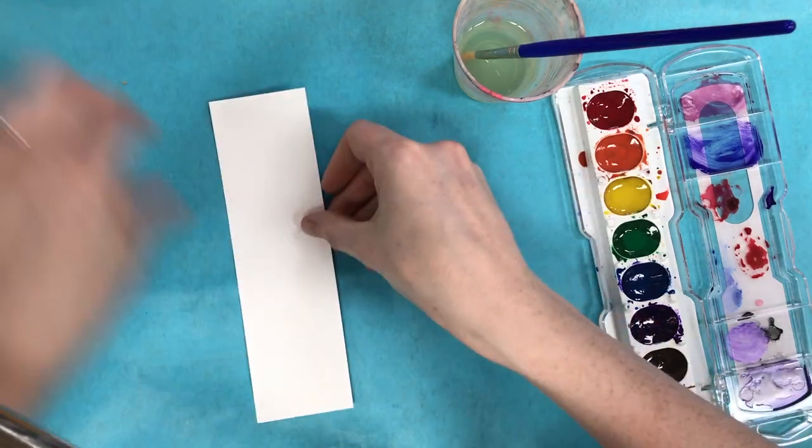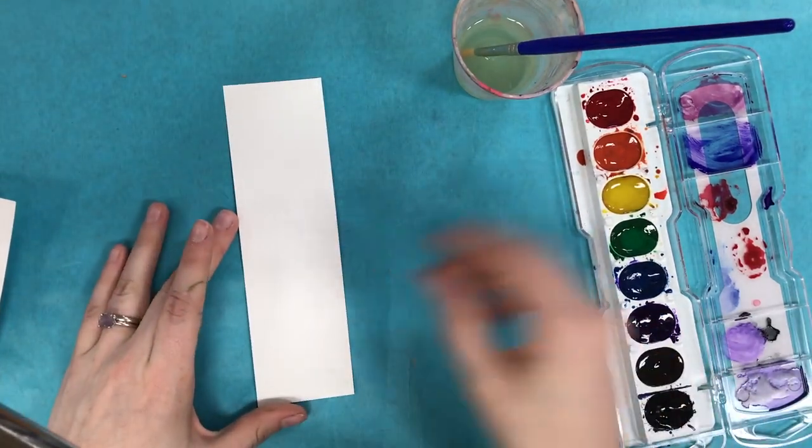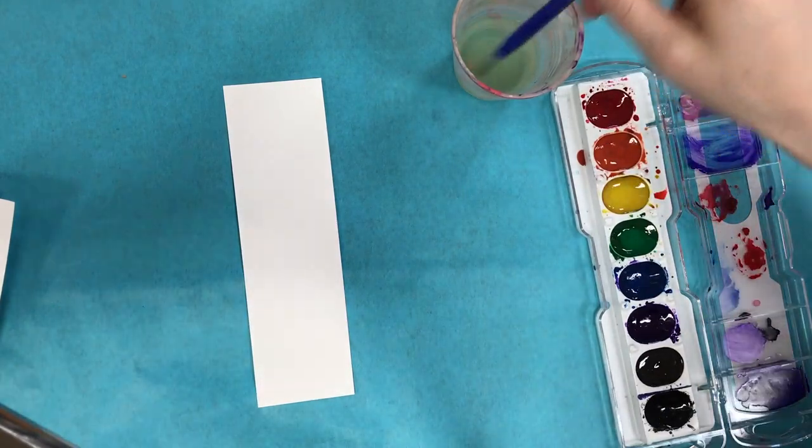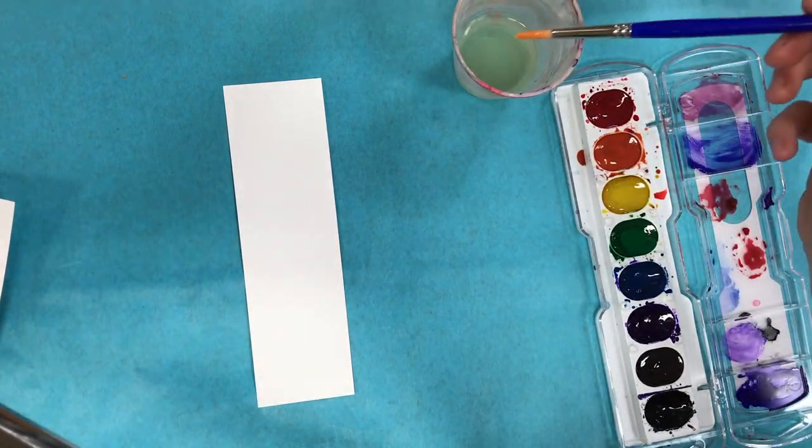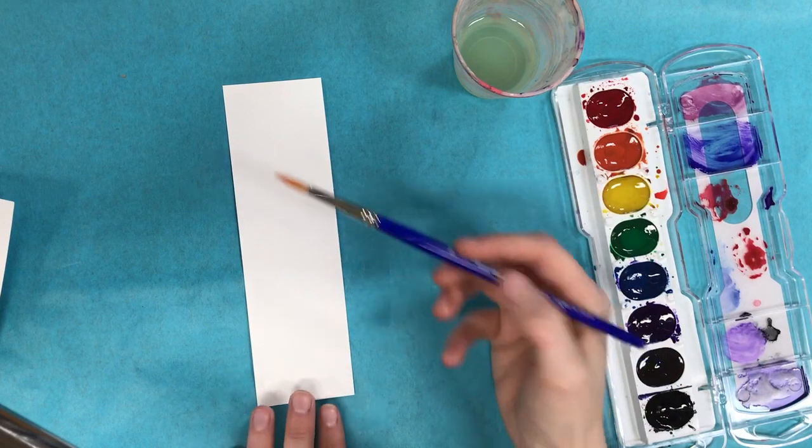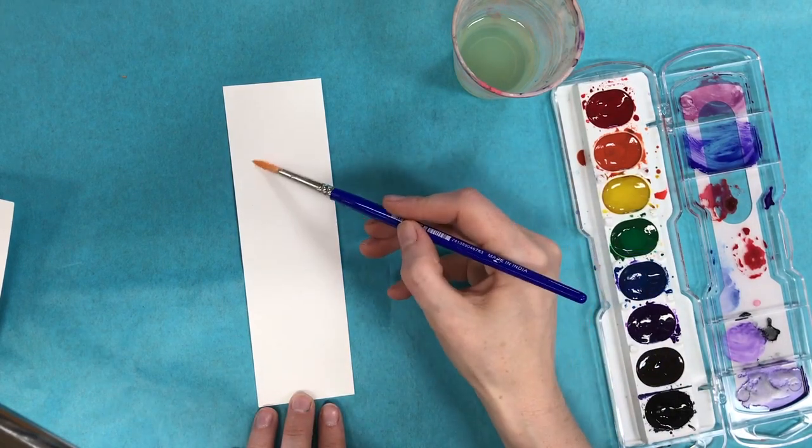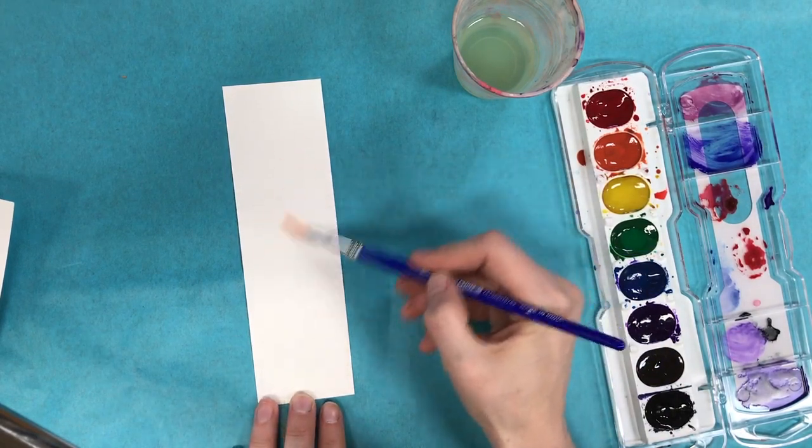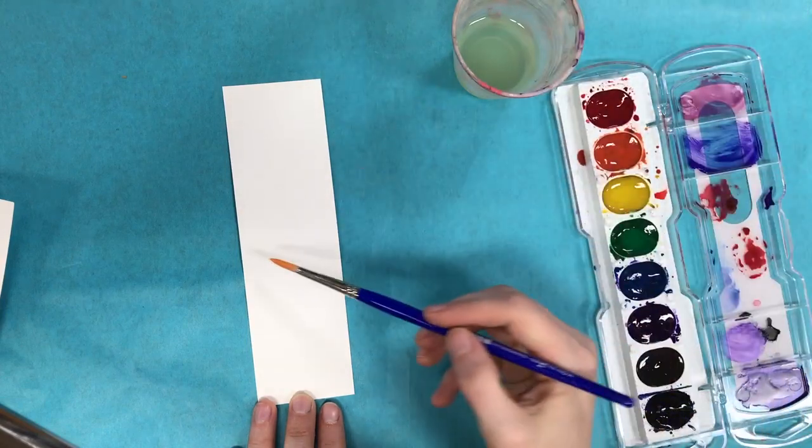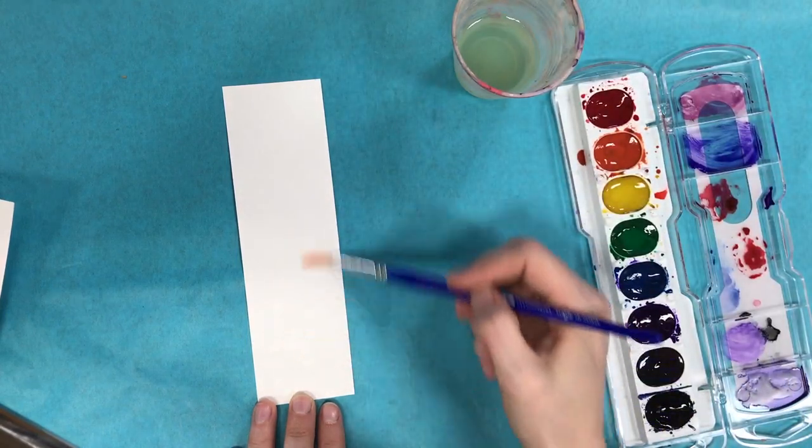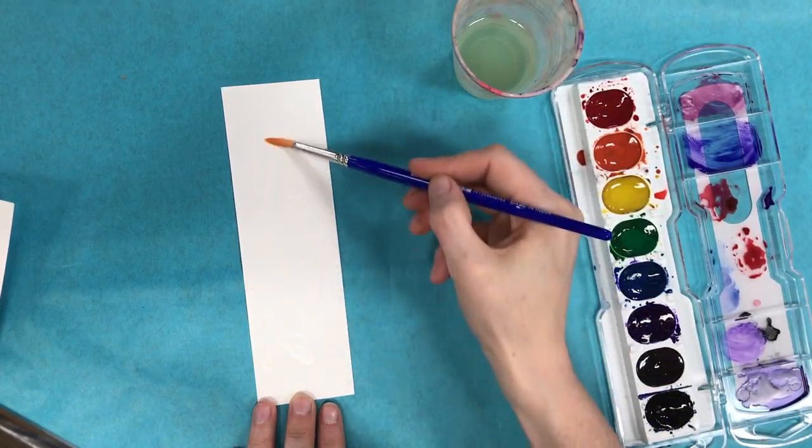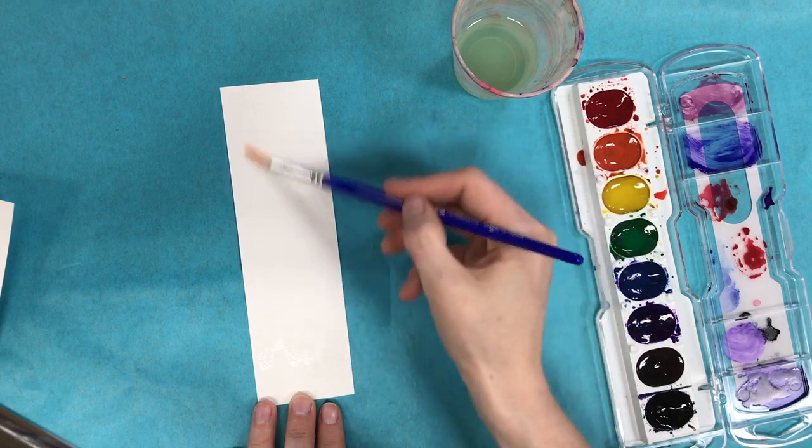Okay, up next I want to show you how to blend colors on your paper or to create a gradient. Gradients are easiest to do if you kind of pre-wet the paper. So I have clean water on my brush and I'm pre-wetting this paper. This paper is watercolor paper. It is meant to absorb a lot of water.